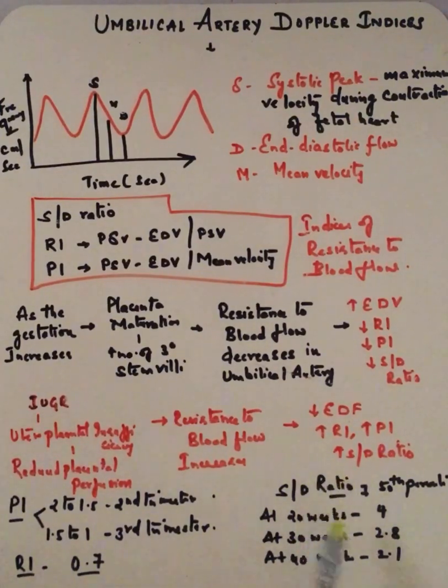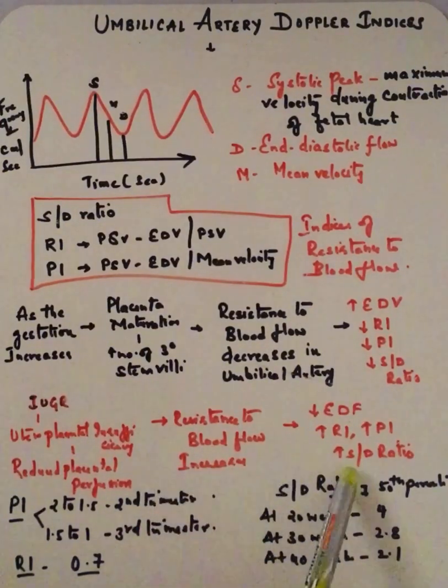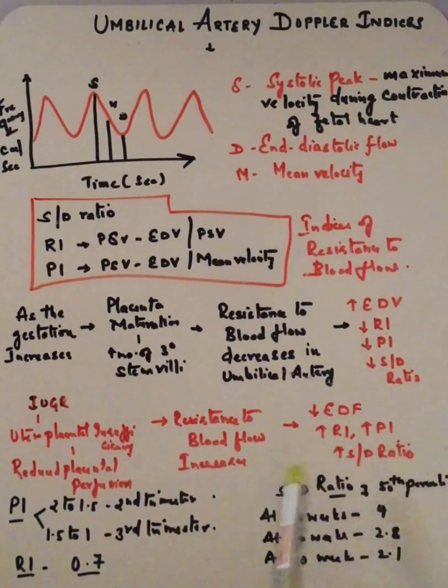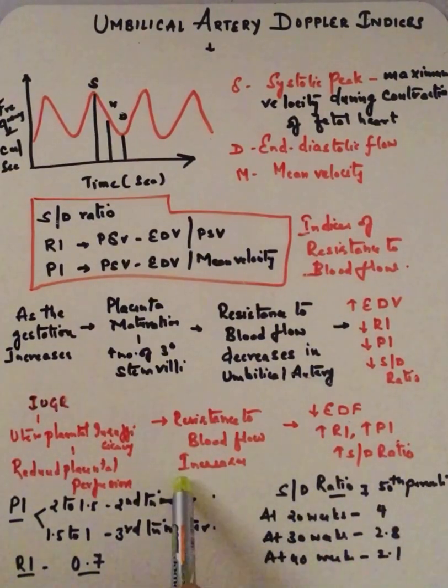One thing you have to remember: it all depends upon the placental vascular resistance. As the placental vascular resistance increases, end-diastolic flow—the flow from fetus to placenta in the umbilical artery—decreases. With further increase in placental vascular resistance, there will be absent flow. With still further increase, there will be reversal of flow in the umbilical artery.